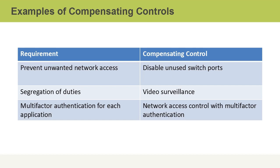Another requirement might be segregation of duties as related to a specific business process. Our compensating control might be to use video surveillance within the facility. Another requirement might be to use multi-factor authentication for each application. However, a compensating control instead might be to use network access control to control network access in the first place.